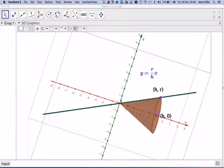the equation of the line is going to be y equals r over h times x.